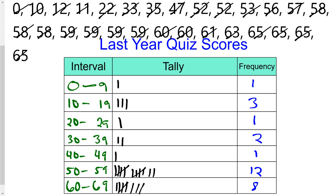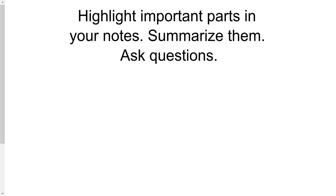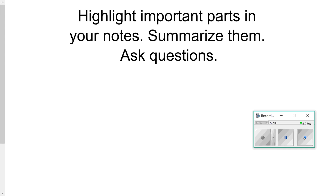On your Canvas portion, the next question is going to ask you to type in the intervals. Just type it exactly how you're writing it: 0-9, 10-19, and so on. But before you do that, make sure you're highlighting all the important parts in your notes, summarizing them, and asking any questions you may have. If you need another example, there are teachers in the room to help — raise your hand, don't be shy. Good luck, keep going.